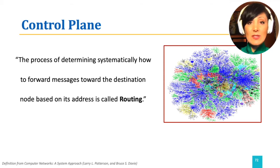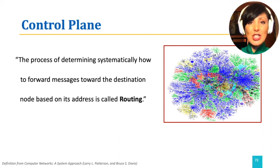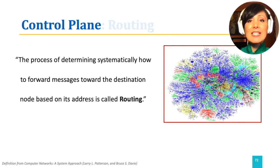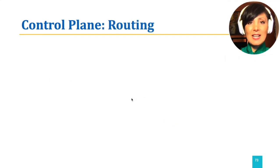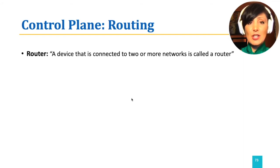What is routing? The process of determining systematically how to forward messages towards the destination node, based on its address, is called routing. A router is a device that is connected to two or more networks and delivers this functionality.